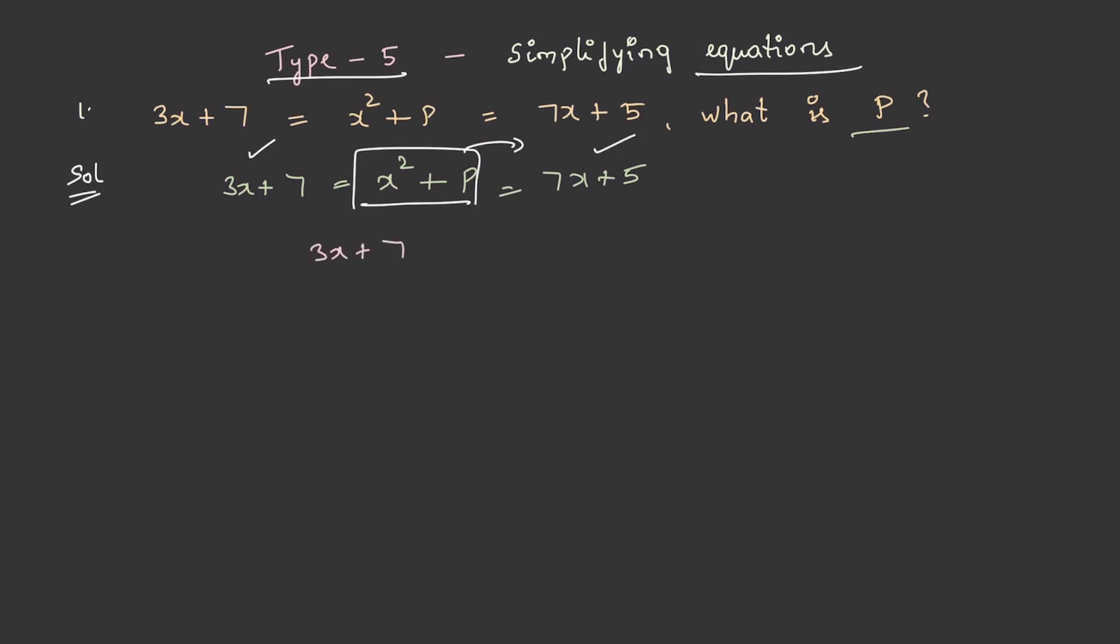3x + 7 = 7x + 5. Now, 4x = 2, and this becomes x = 1/2.